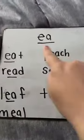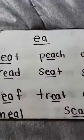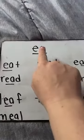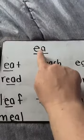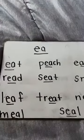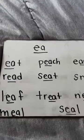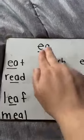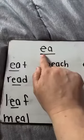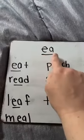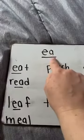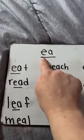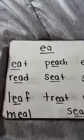The sound that we're going to be talking about today is EA. And EA says E. What does EA say? It says E. Yes, E. Good. Sometimes people say when two vowels go walking, the first one does the talking. So in this case it doesn't say EA or EA — it just says E. Yes, E.